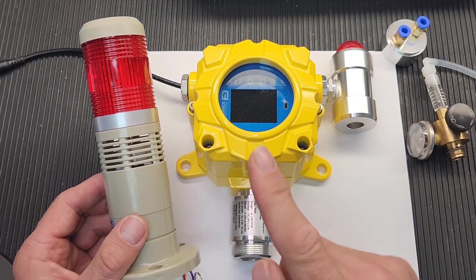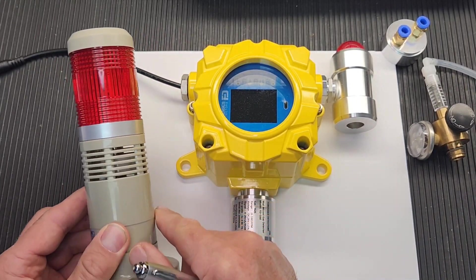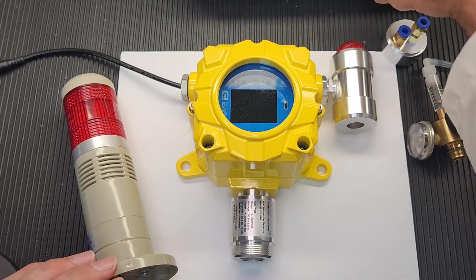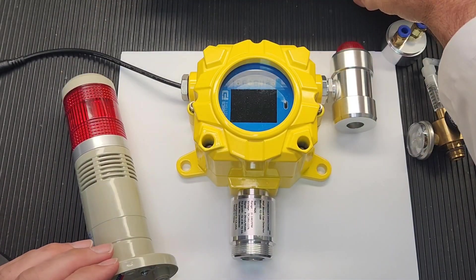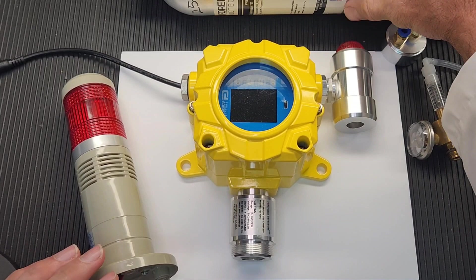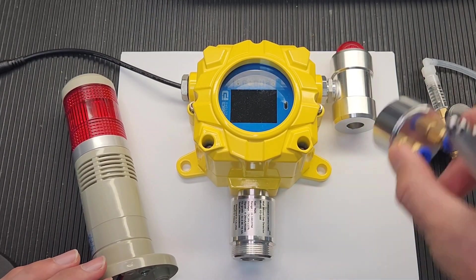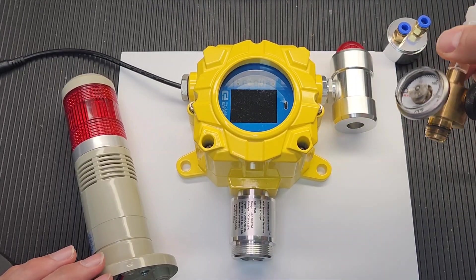Make sure before you start you have the fixture. Make sure you have your unit with power supply. Make sure you have your test gas that I have here. Today we're using H2S. This is a H2S hydrogen sulfide warn-out unit. Make sure you have your calibration cap and your gas regulator.